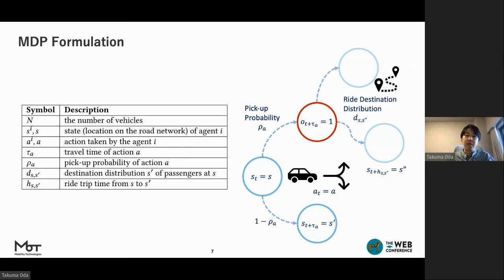On the other hand, if no matching occurs, the agent transitions to the road network successor nodes, which requires a time step of tau. This formulation can also be applied to multi-agent setting, in which interaction between agents happens only through matching process, which brings me to my next topic, pickup probability modeling.